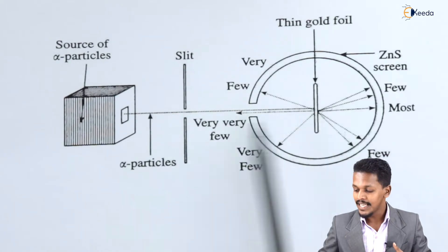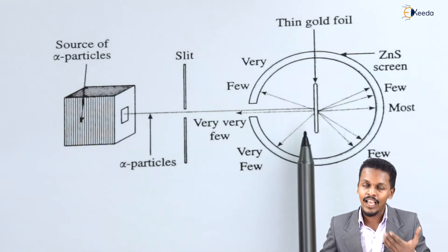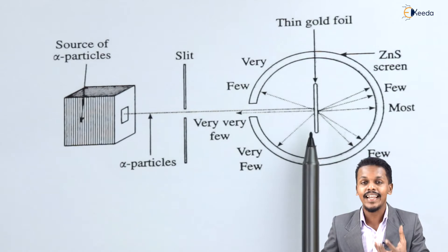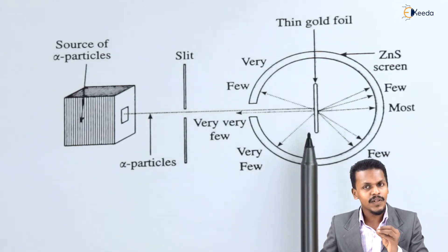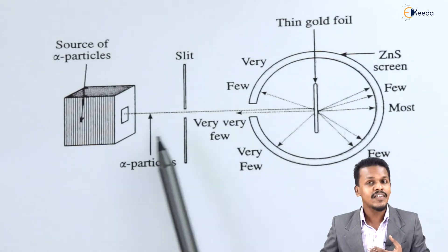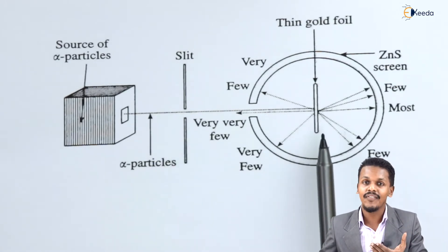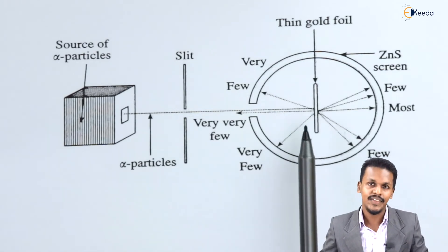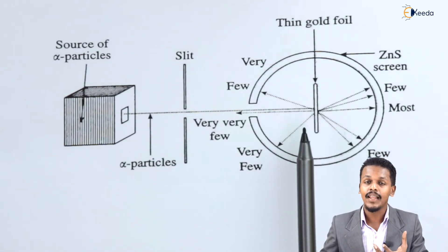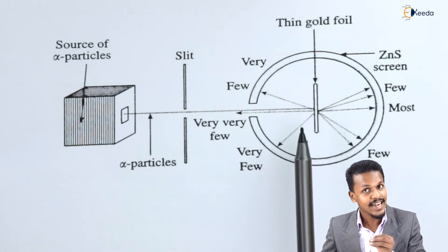The second thing is, since they were scattered at an angle of less than 90 degrees, that made Rutherford predict that the atom consists of electrons. Obviously, whenever the alpha particles collide with the electron, which is a lighter particle, they will scatter with an angle of less than 90 degrees. That made Rutherford think that the electron is present in an atom.